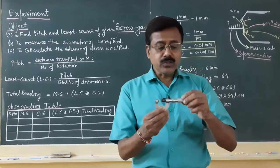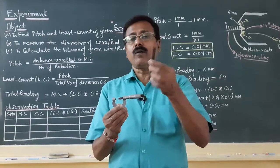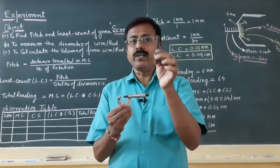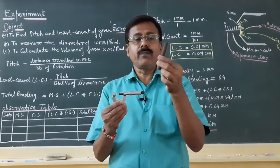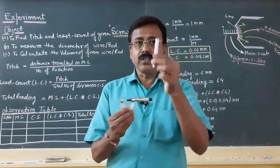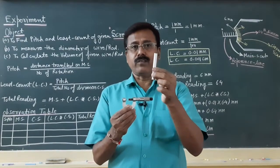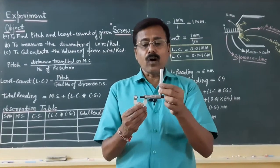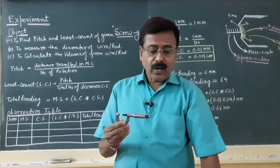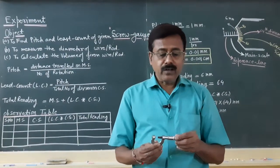With the help of this instrument we can measure the diameter of objects. For example, this thick wire — you can measure its diameter, half of its diameter will be the radius, and accordingly you can find the volume. Such objects like rods are used with the screw gauge to measure diameter.